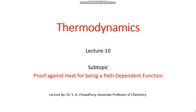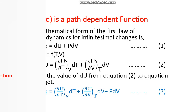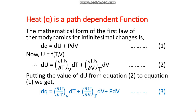Hello everyone, let's move on to the next lecture of thermodynamics, lecture number 10. The subtopic is proof against heat for being a path-dependent function. In this regard, we have to start from the mathematical form of the first law of thermodynamics, which is dq equals du plus p dv. This is equation number one.